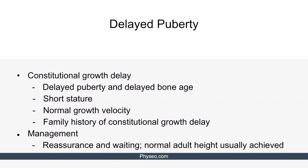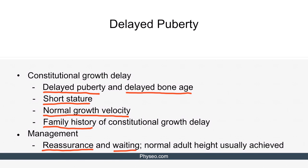Constitutional growth delay indicates delayed puberty and delayed bone age. The patient has a short stature but normal growth velocity. In other words, bone growth starts later than normal, but it grows at an appropriate rate. Patients with constitutional growth delay usually have a family history of the same condition. The management is reassurance and waiting because this patient will most likely catch up with his peers. Normal adult height is usually achieved as well.